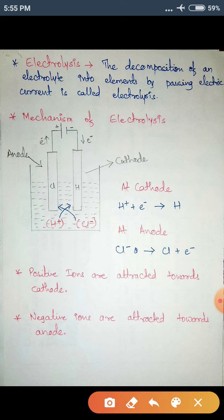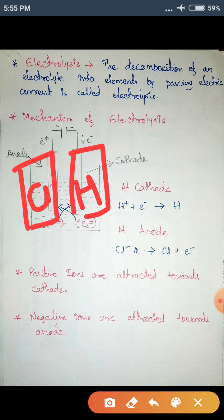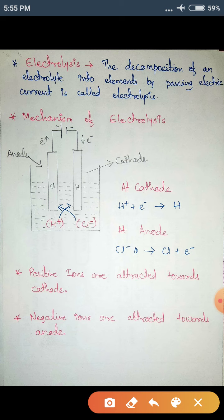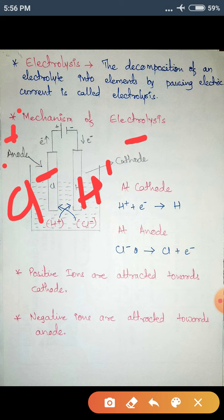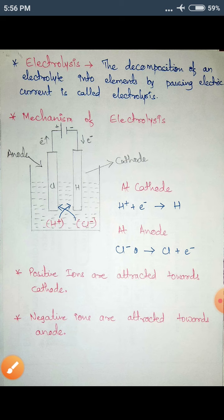After some time, all the positive charges — that is, all the hydrogen — accumulate on the cathode electrode, and all the chlorine accumulates on the anode. So you get hydrogen on one electrode and chlorine on the other. Chlorine, having negative charge, is attracted towards the positively charged anode, and hydrogen, having positive charge, is attracted towards the negatively charged cathode.